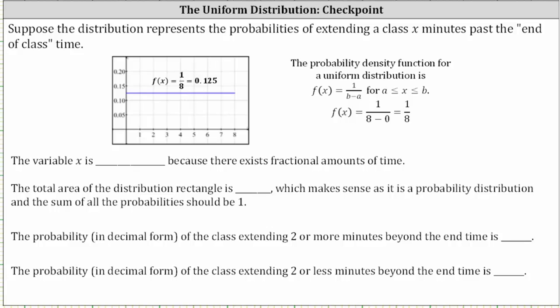The minimum value of x is zero on the left, and the maximum value of x is eight on the right. When we have a uniform distribution, we can determine the probability density function using the formula f(x) = 1 / (b - a), where b is the max and a is the min of the random variable x. In our case, this gives us f(x) = 1 / (8 - 0), or f(x) = 1/8, which is equal to 0.125.